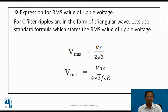Expression for RMS value of ripple voltage: for this filter, ripples are in the form of a triangular wave. Using the standard formula, VRMS = VR / (2√3). Substituting VR = Vdc / (2FCR), VRMS becomes Vdc / (4√3 × F × C × R).